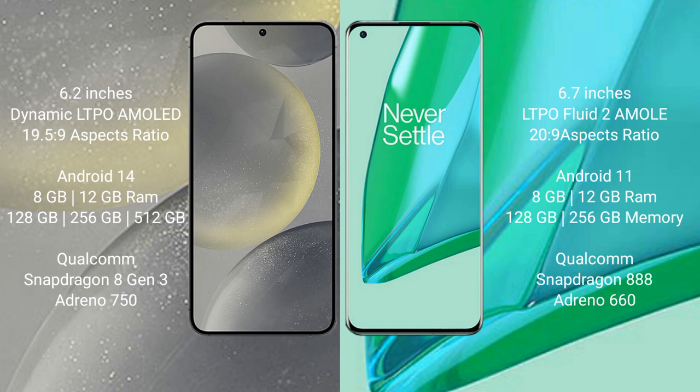Samsung Galaxy S24 comes with 8GB and 12GB RAM, and 128GB and 256GB internal storage, with a Snapdragon 8 Gen 3 processor, 8GB and Exynos 350.